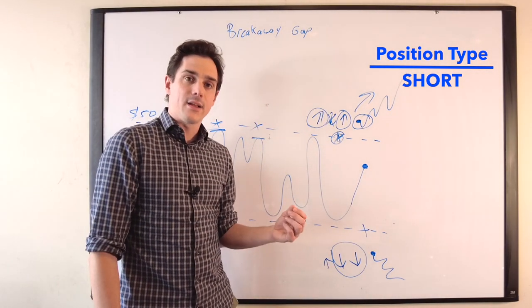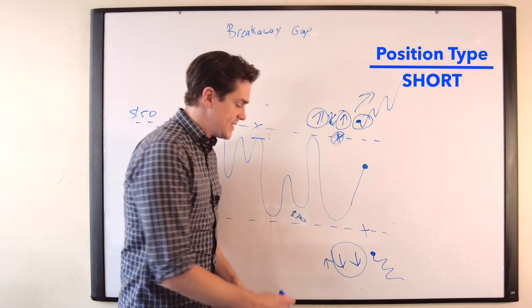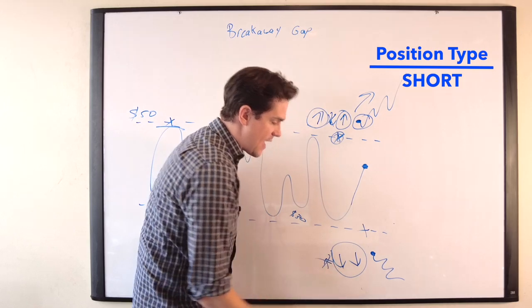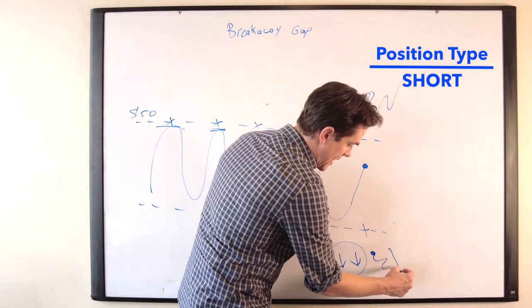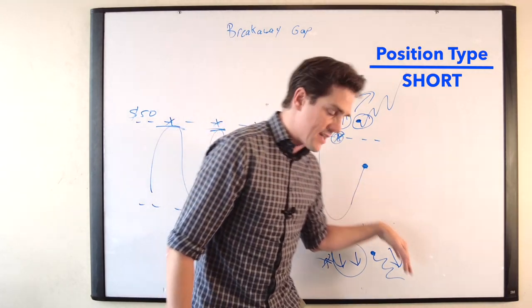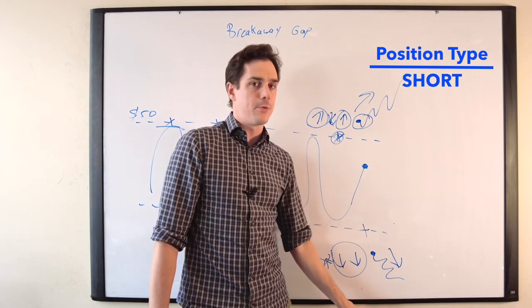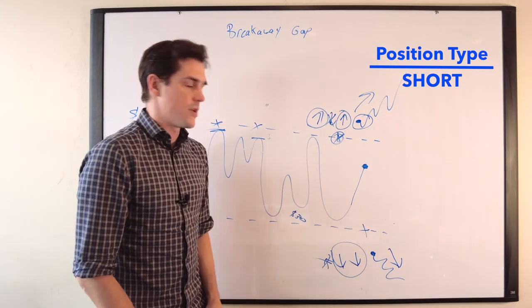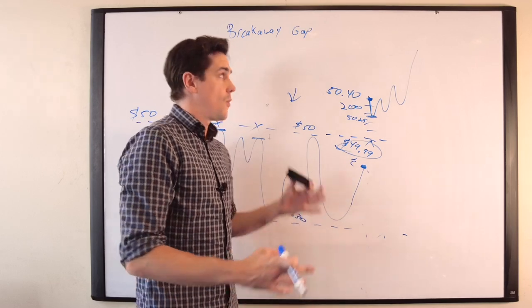Same thing here. The selling of panic long sellers and new short sellers entering the market is going to tend to outweigh that new buying that's coming in. And a breakaway gap to the downside can oftentimes lead to a gap and go, which is going to be continuation in the direction of that gap. It just puts enough people out of the money - they're panic-selling out - that you get continuation lower.